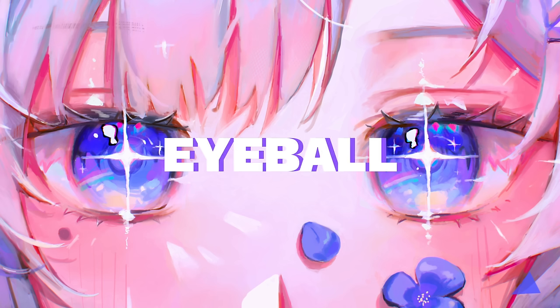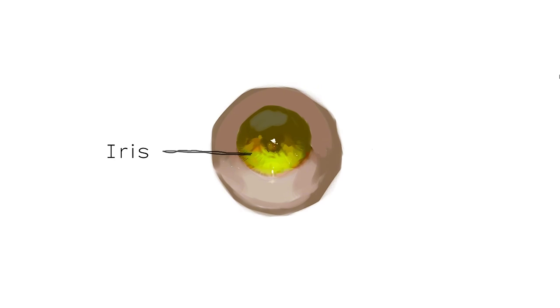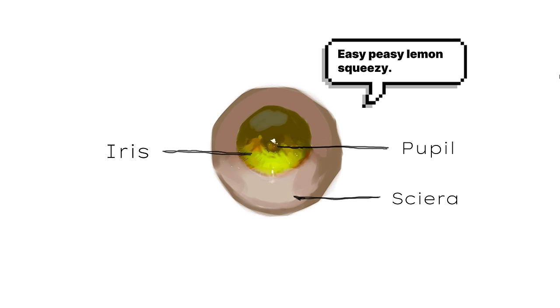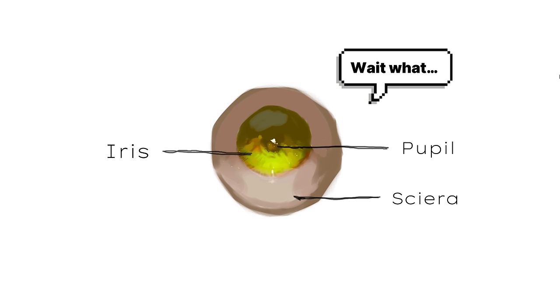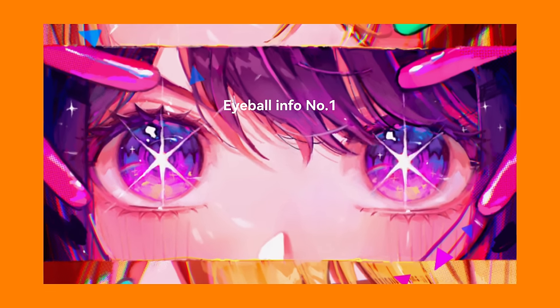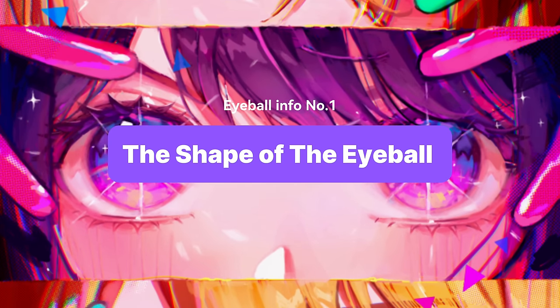Next is the eyeball. The eyeball consists of iris, pupil, and the sclera. Though that may seem simple, this is often where people get things wrong. For example, the shape of the eyeball.